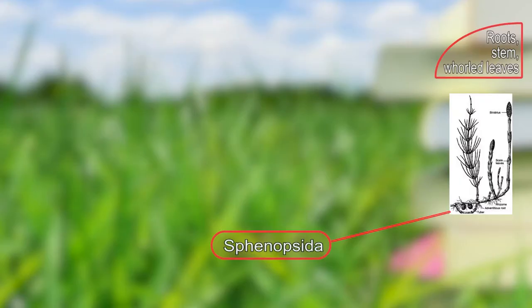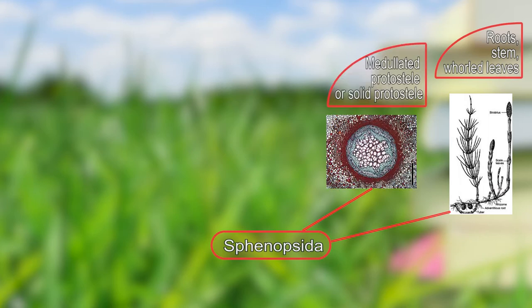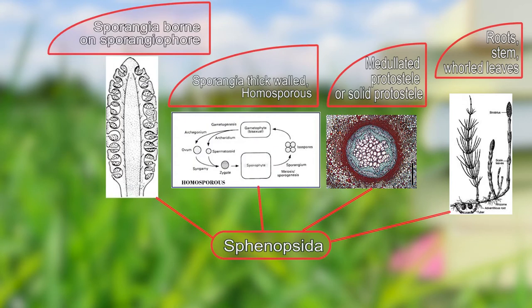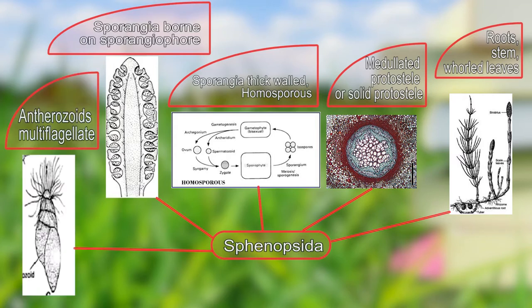Here we discuss some very general characters of Equisetum. The plant body is differentiated into roots, stem, and leaves. The leaves are usually reduced. It consists of a protostele. It is a homosporous plant and the sporangia are thick-walled. The sporangia are borne on sporangiophores, and the antherozoids produced are multiflagellate.